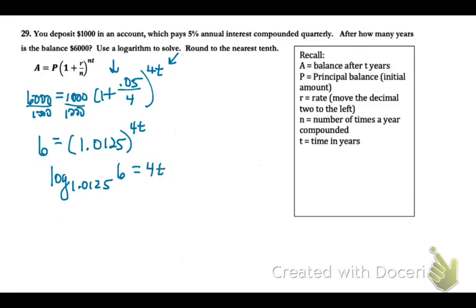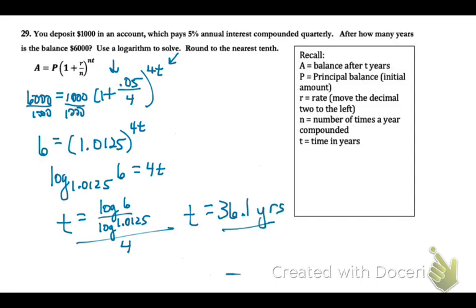So do the change of base. Log of 6 divided by log of 1.0125. Divide that by 4. And then 2 tenths place. Hopefully, did you get 36.1 years? So a bit of time.